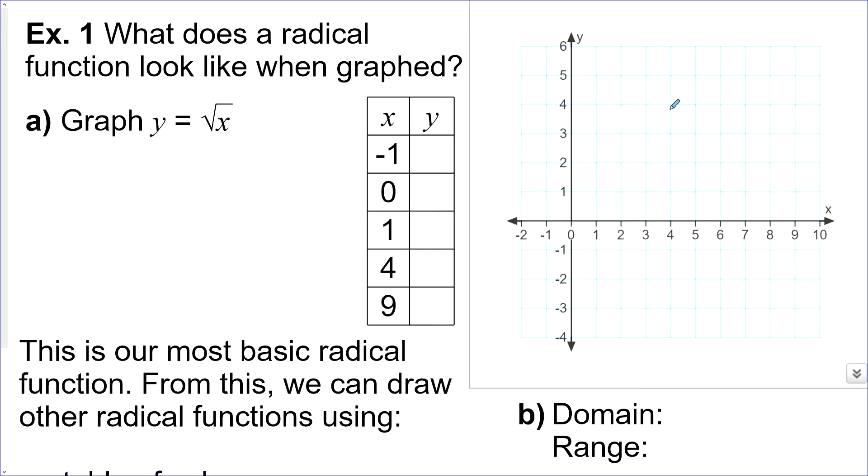What does a radical function look like when graphed? Let's graph our most basic y equals the square root of x using a table of values. Now, I put negative 1 here. The square root of negative 1 is not real, so that won't be showing up on our graph. It's actually imaginary, but we don't use imaginary numbers in the course Math 30-1. The square root of 0 is not a problem. It is 0. The square root of 1 is 1, square root of 4 is 2, and the square root of 9 is 3.